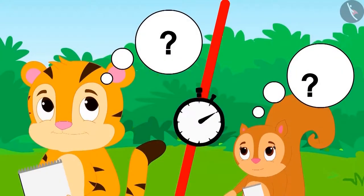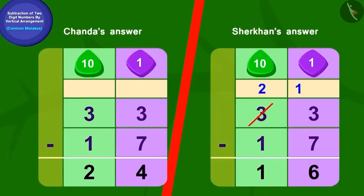Chanda and Sher Khan started thinking. The allotted time ended and Chanda and Sher Khan wrote their answers in this way. Children, can you tell whose answer is correct?